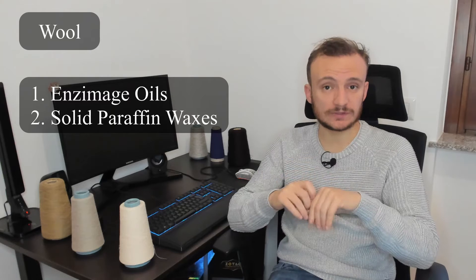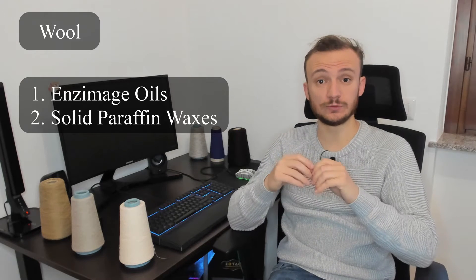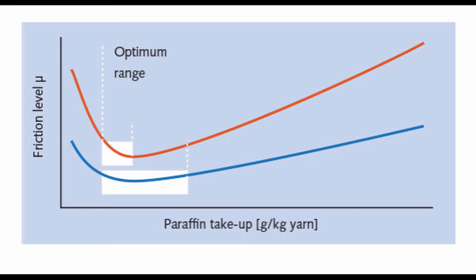Regarding wool, ensimage oils and solid paraffin waxes are used because wool has some scales, and these scales can spoil the correct flow of the yarn during the weaving process. Friction levels, if too high, can really ruin your fabric.